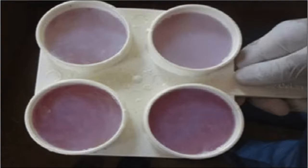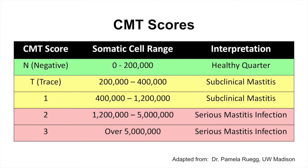If there is mastitis or high levels of somatic cells present, we'll start to see clumping or aggregates forming within the paddle sections. As you can see here, some samples show evidence of mastitis with a high somatic cell count, while others show no reaction. After running the test — which is a qualitative test based on visual observation of the reaction — we're then able to try to quantify those numbers based on the visual observations we see when mixing the solution with the milk sample from each quarter.